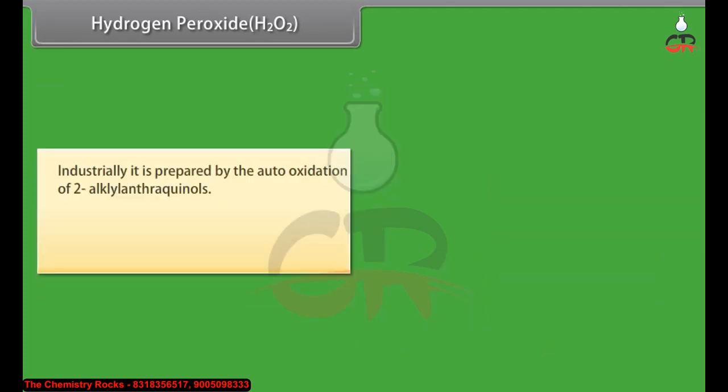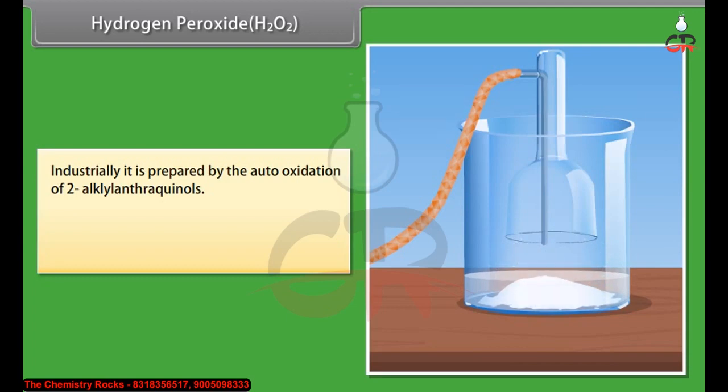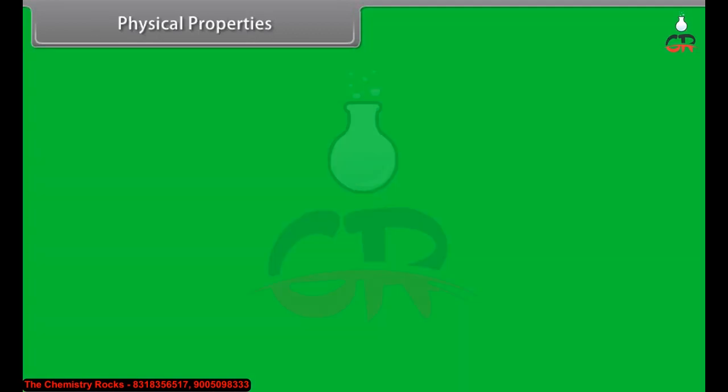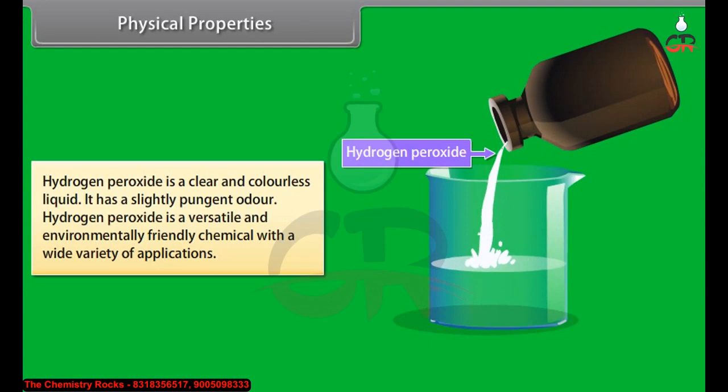Industrially, it is prepared by the auto-oxidation of 2-alkyl-anthraquinols. When 2-ethyl-anthraquinol is oxidized in the presence of hydrogen or palladium, it gives hydrogen peroxide.